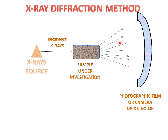The diffraction angles are then measured, and according to these angles, the crystal unit can be found in the sample. This is the method for studying the crystal structure of any sample by using X-rays.